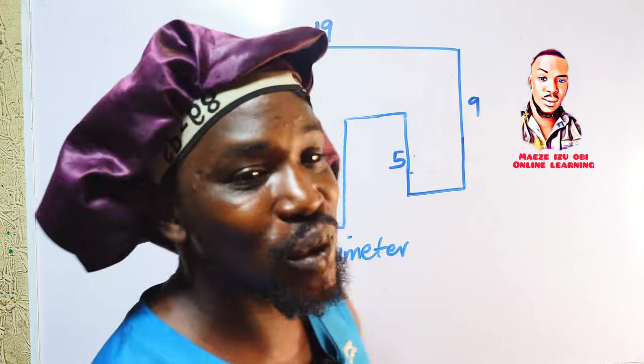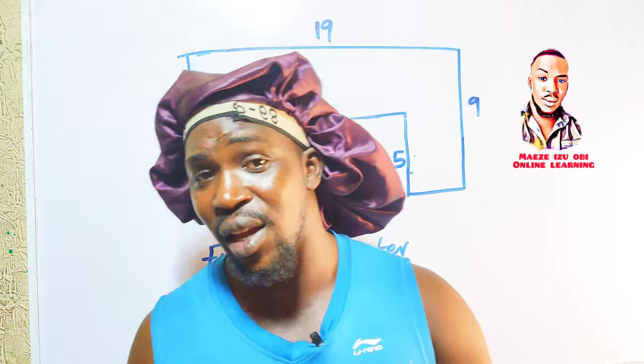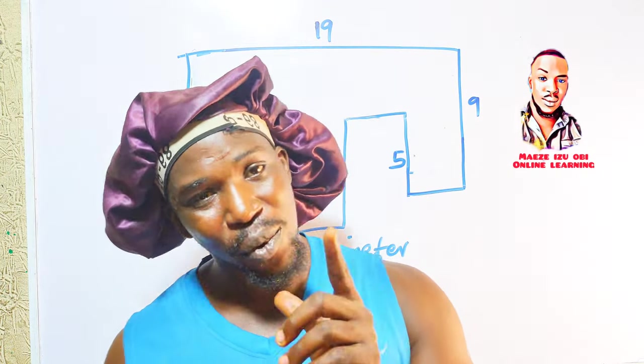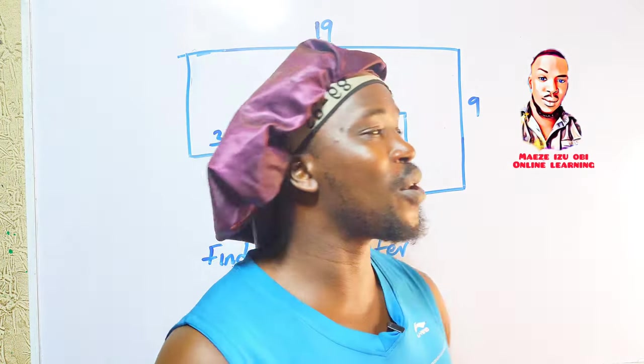Welcome back. In today's question we are going to look at solving the perimeter of an irregular shape. It is confusing but it is very easy and you are going to enjoy it. Now follow me to the board.